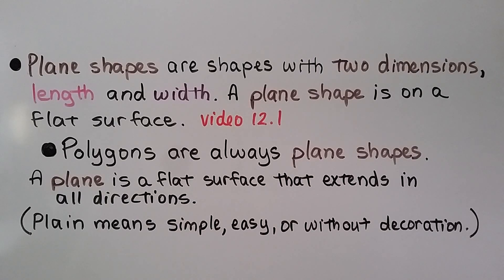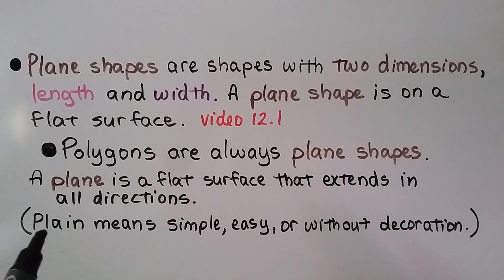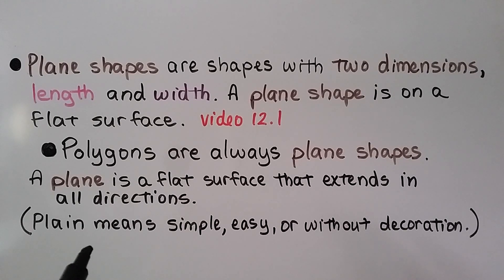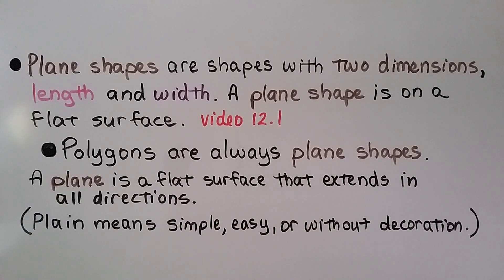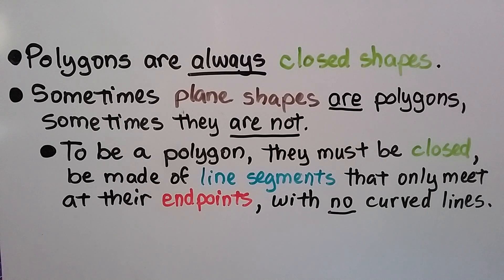Plane shapes are shapes with two dimensions — length and width — on a flat surface. Polygons are always plane shapes. Note the spelling: p-l-a-n-e means a flat surface extending in all directions, while p-l-a-i-n means simple or without decoration. To be a polygon, a shape must be closed, made of line segments that only meet at their endpoints, with no curved lines.